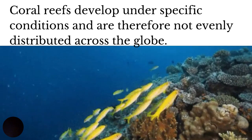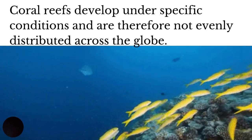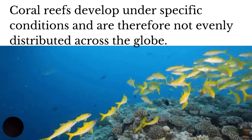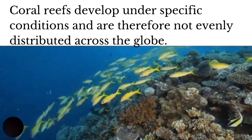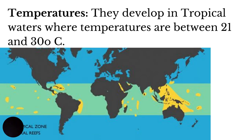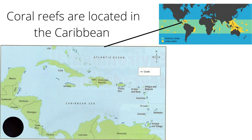Coral reefs develop under specific conditions and are therefore not evenly distributed across the globe. Coral reefs develop in tropical waters where the temperatures are between 21 and 30 degrees Celsius, and therefore coral reefs are found throughout the Caribbean region.